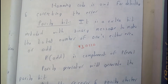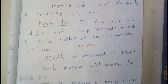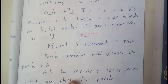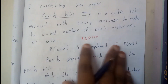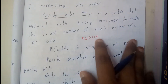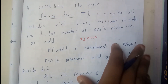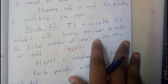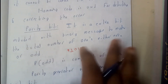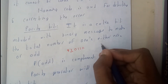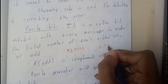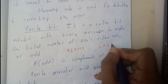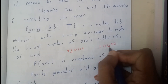Odd parity is the complement of even parity. The parity generator will generate the parity bits at the sender, and the parity checker will be used to check the parity at the receiver. So if it is of odd parity, I'll be sending the message.